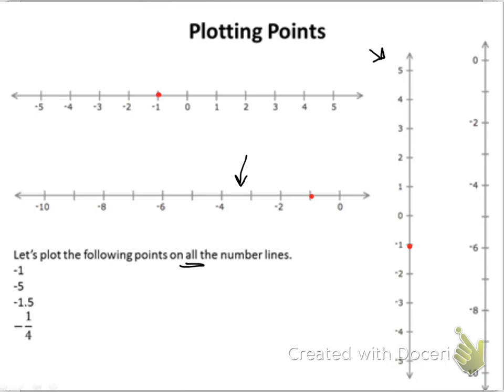Our last number line — it's actually decreasing by 2 each time, and I know that negative 1 is in between 0 and negative 2. So I'll put my negative 1 right there.